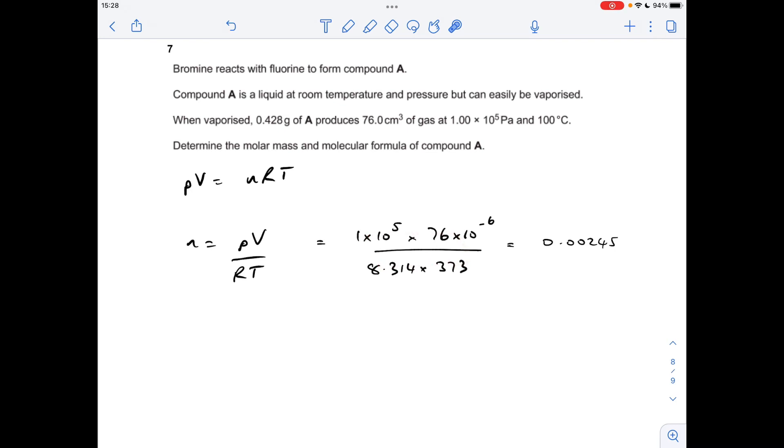So rearranging PV equals nRT for n. If we sub in the numbers, just be careful with your unit conversions. Pascals are the correct units for the ideal gas equation. Centimetres cubed we can't use—we've got to turn them into cubic metres. So I just put 10 to the minus 6 after it, so 76 times 10 to the minus 6 is that in metres cubed. 8.314 is the gas constant. And we can't use degrees Celsius—we've got to put that into Kelvin. So we add 100 onto 273 and get 373. So that's how many moles of compound A are present. When we do mass over moles for A, we get an MR of 174.6 grams per mole.